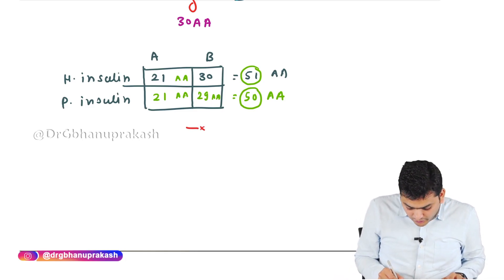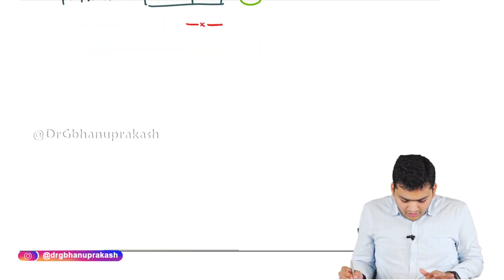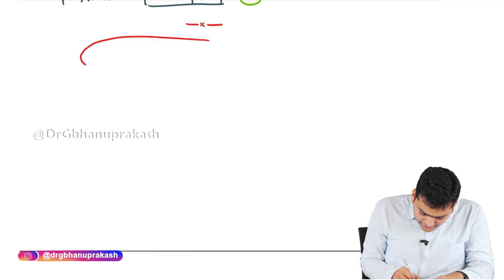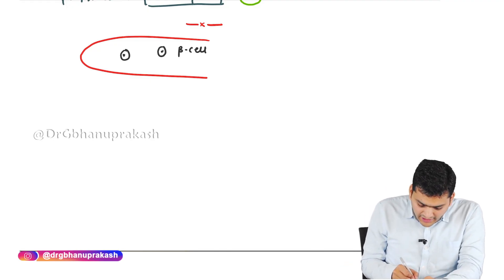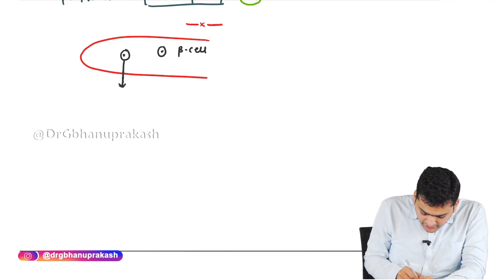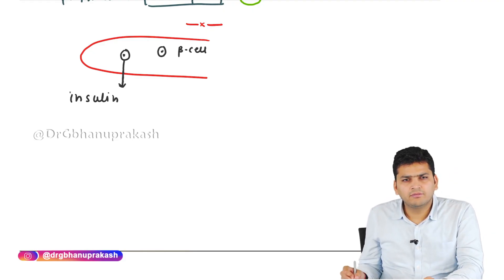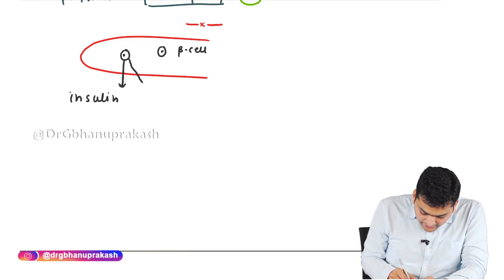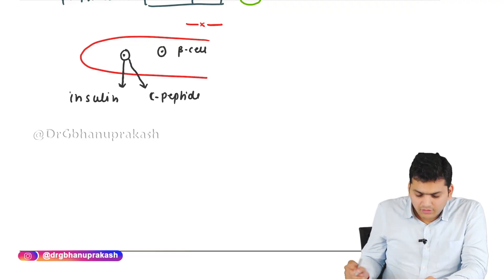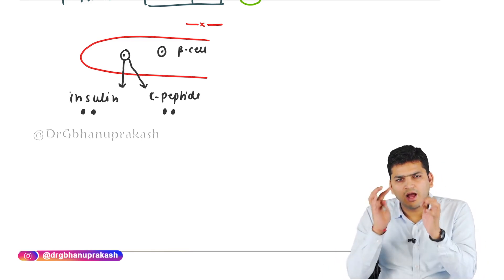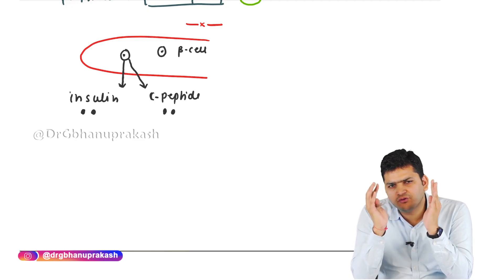For clinical correlation: in the pancreas, beta cells fire whenever stimulated by glucose and secrete two molecules — insulin and C-peptide — in equal quantities at the same time. If two molecules of insulin are secreted, two molecules of C-peptide are also secreted. Both are released into the circulation in exactly the same amount.